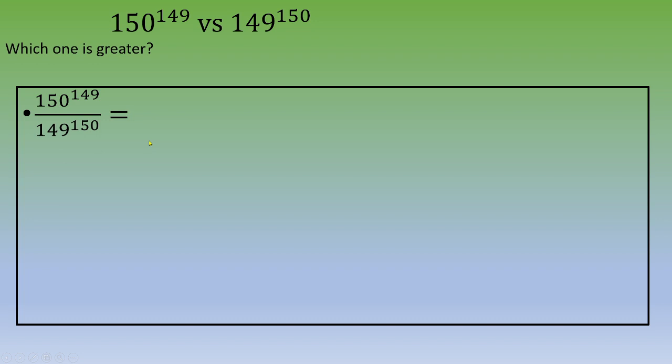Now we would like to modify the denominator to get the same power. Thanks to this power rule, a power m plus m equals a power m times a power m. We could modify the denominator and we end up with 150 power 149 divided by 149 times 149 power 149.